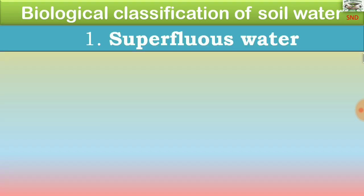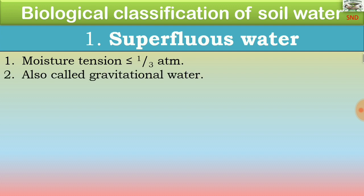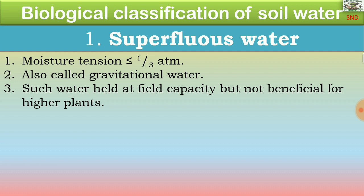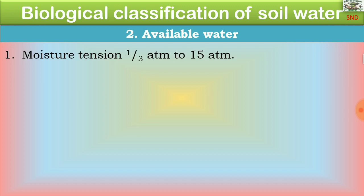Under biological classification, the first type is superfluous water, with moisture tension less than or equal to one-third atmosphere. It is also called gravitational water, held at field capacity, but is not beneficial for higher plants.